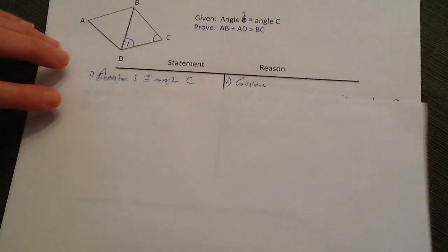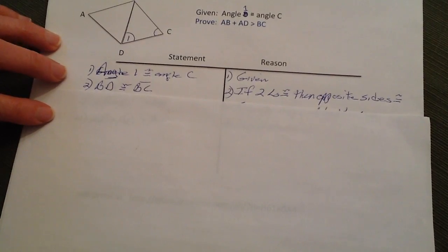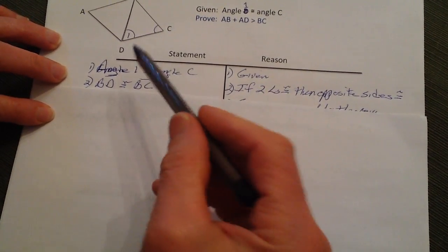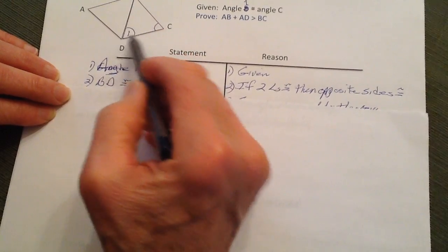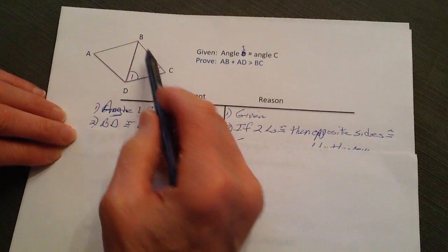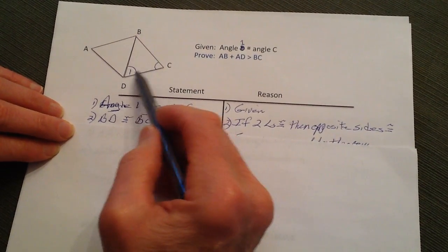All right, so what we do is go ahead and put down the given. The second thing is that we know BD is going to be equal to BC because these two angles are the same.